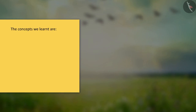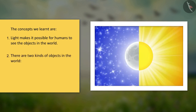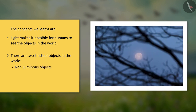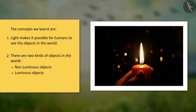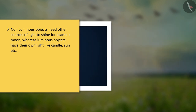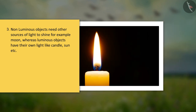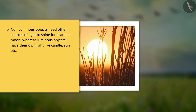The concepts we learnt: Light makes it possible for humans to see the objects in the world. There are two kinds of objects in the world — non-luminous and luminous. Non-luminous objects need other sources of light to shine, for example the moon, whereas luminous objects have their own light, like a candle, the sun, etc.